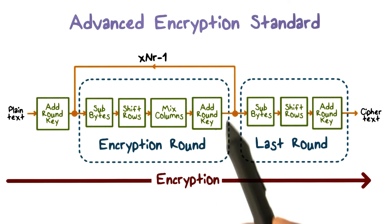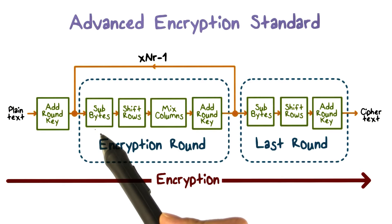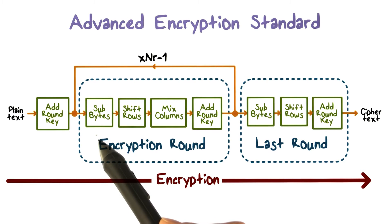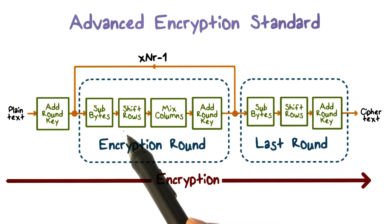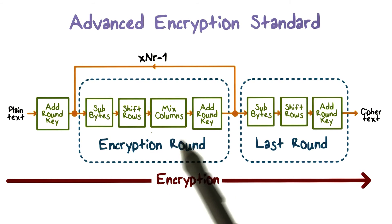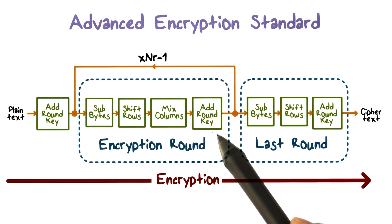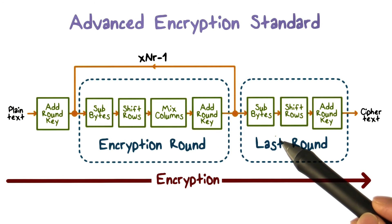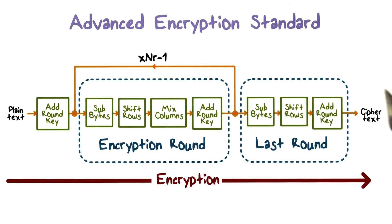The operations at each round include substitute bytes, which involves using a table referred to as an S-box to perform byte-to-byte substitution of the block. Shift rows is a simple permutation that is performed row by row. Mix columns is a substitution that alters each byte in a column as a function of all the bytes in the column. Then the result is XORed with the per-round key. The operations of the last round include substitute bytes, shift rows, and add per-round key, and the result is the ciphertext.